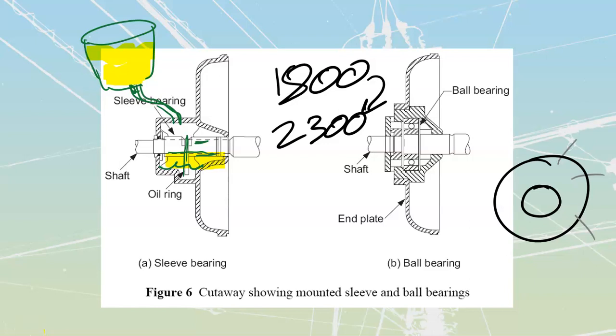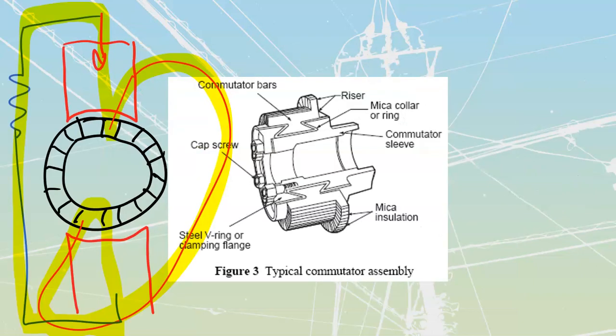That is our intro to DC machines. Once again, motors and generators are almost the same except for the casing, which is the big differential. And the commutator's purpose is to be a rotary switch that maintains direction — either the direction of current in the case of a generator, or the direction of the magnetic fields in the case of a motor.